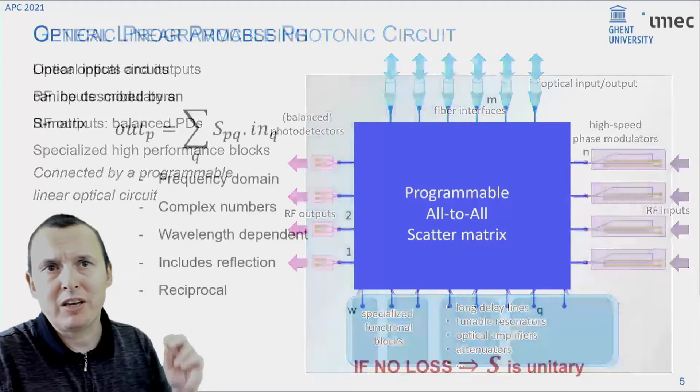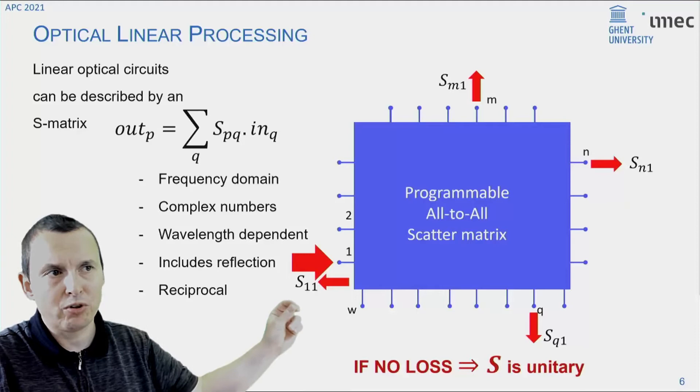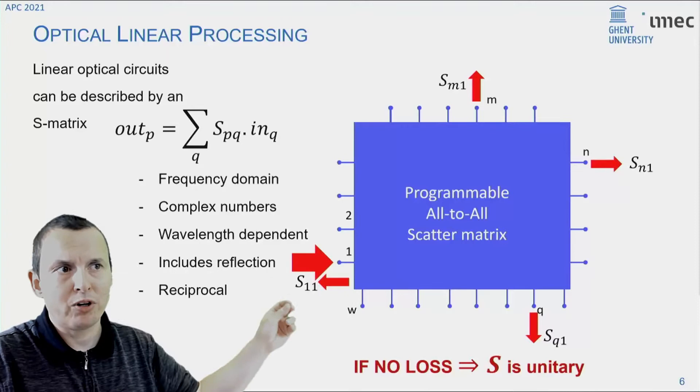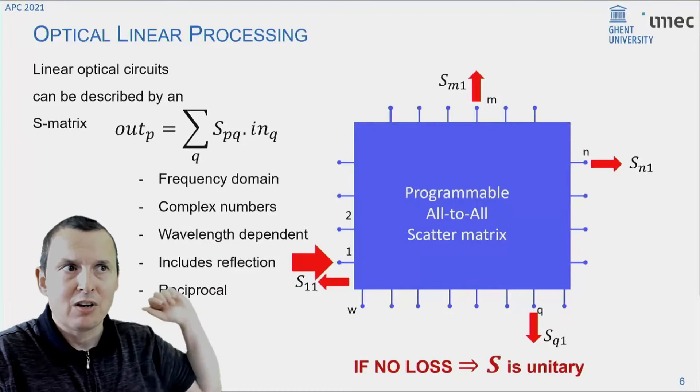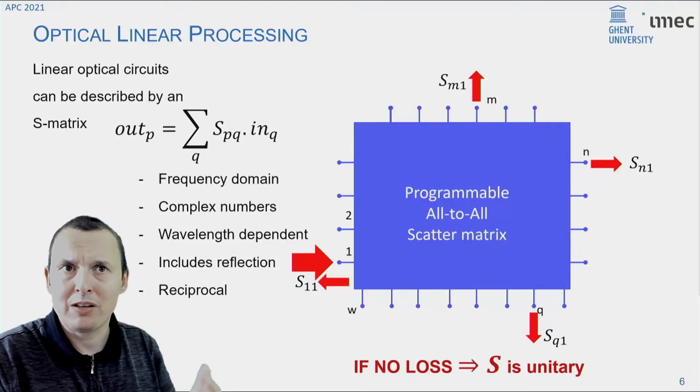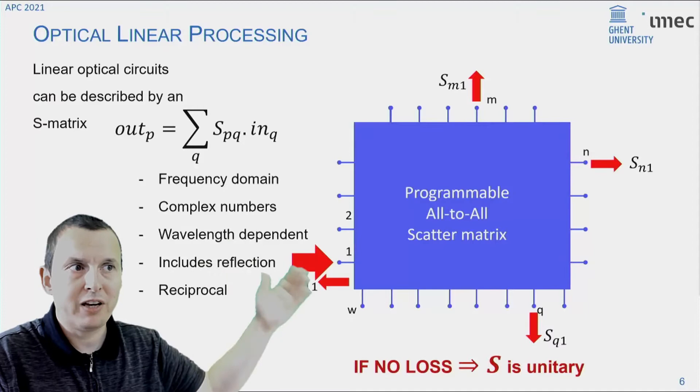So your microwave signals are modulated onto an optical carrier and demodulated using photodetectors back into the microwave domain. And all the processing happens in this central part, which we call a programmable all-to-all scatter matrix. Now, that particular magic block is essentially nothing more than an electrically controlled waveguide circuit, which allows you to couple light from any port to any set of other ports.